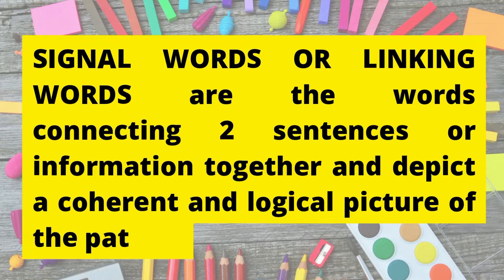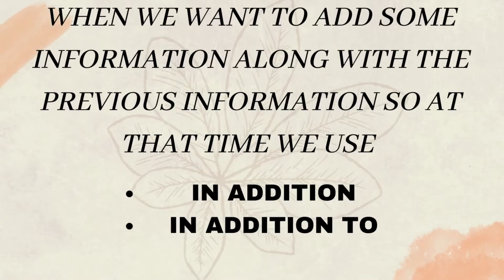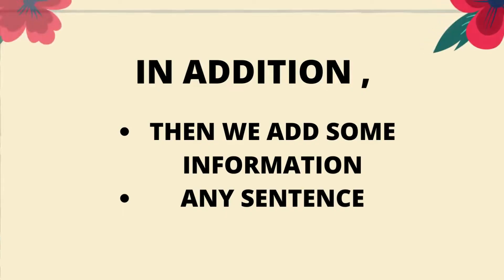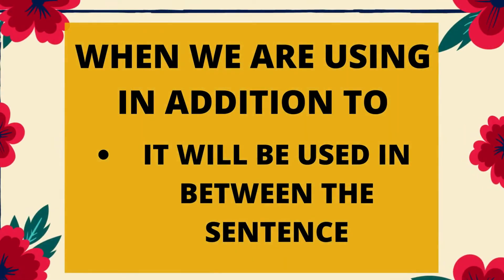Adding information. When we want to add some information along with the previous information, at that time we use 'in addition' or 'in addition to.' For example, 'in addition,' comma, then we add some information, any sentence. But when we are using 'in addition to,' at that time it will be used in between the sentence.